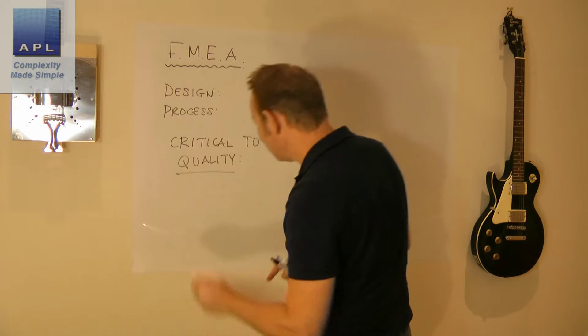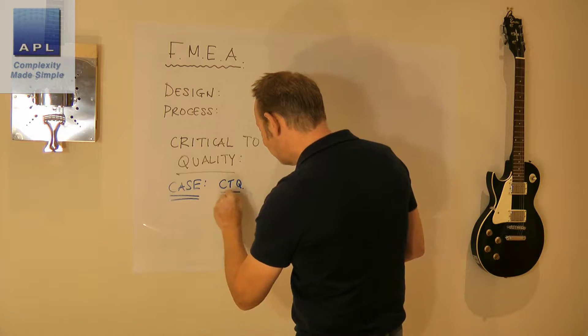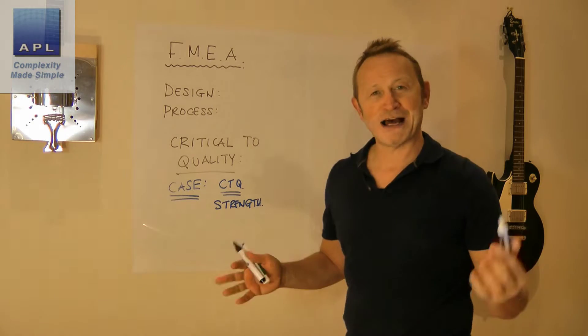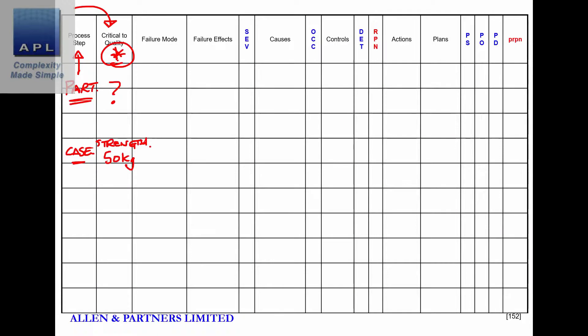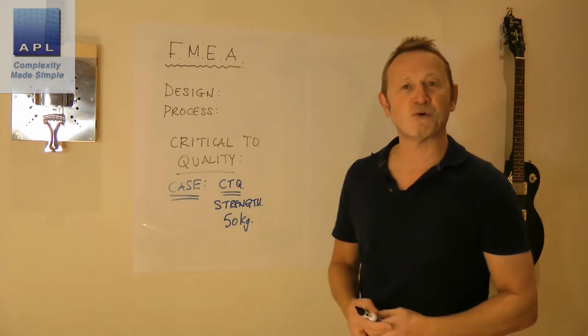Okay, so that's the critical to quality. So what's critical to quality about the plastic case? We go, it's the plastic case. What's critical to quality about that case? Strength. And of course we could put a value to this. Let's say we wanted to resist 50 kilograms, not probably enough for a big fat guy, but 50 kilos maybe. Okay, so that's the strength that we want. Now as you work across the FMEA, of course you're going to decide what risk this is and how much money you want to spend on this. Is it really important that we do this?